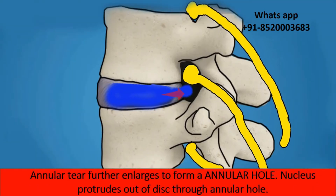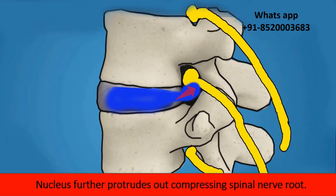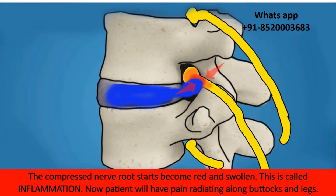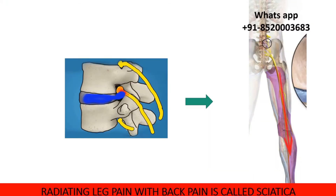The annular fissure further enlarges to form an annular hole, and the nucleus protrudes out through this hole, further compressing the spinal nerve root. The compressed nerve root becomes red and swollen — this is called inflammation — and the patient will have pain radiating along the buttocks and legs. This radiating pain along with back pain is called sciatica.